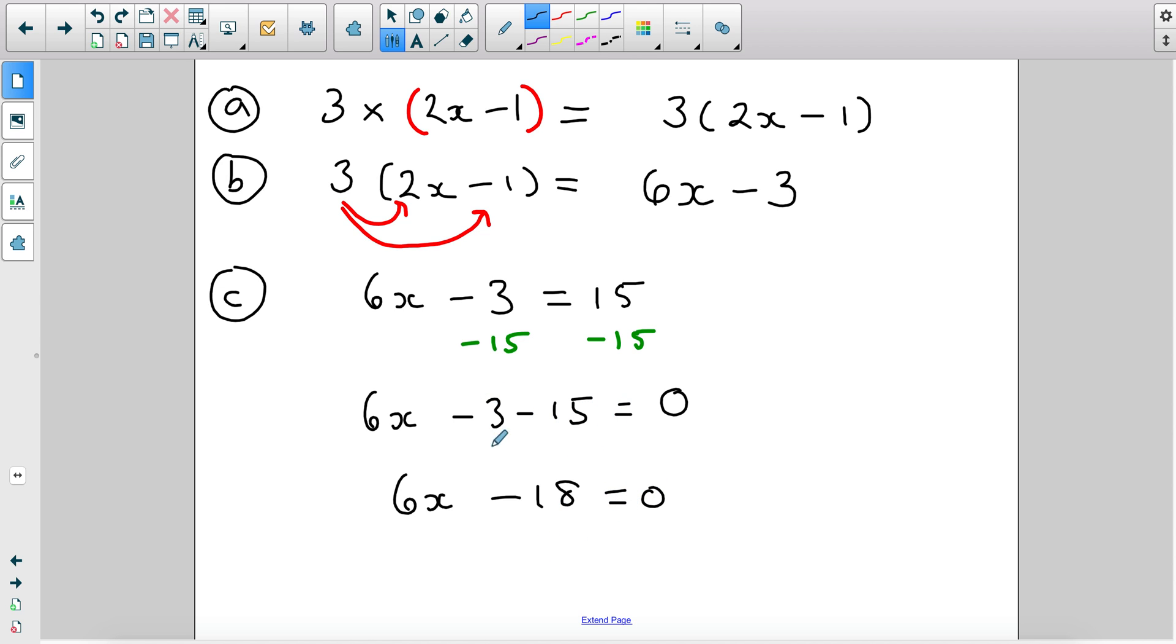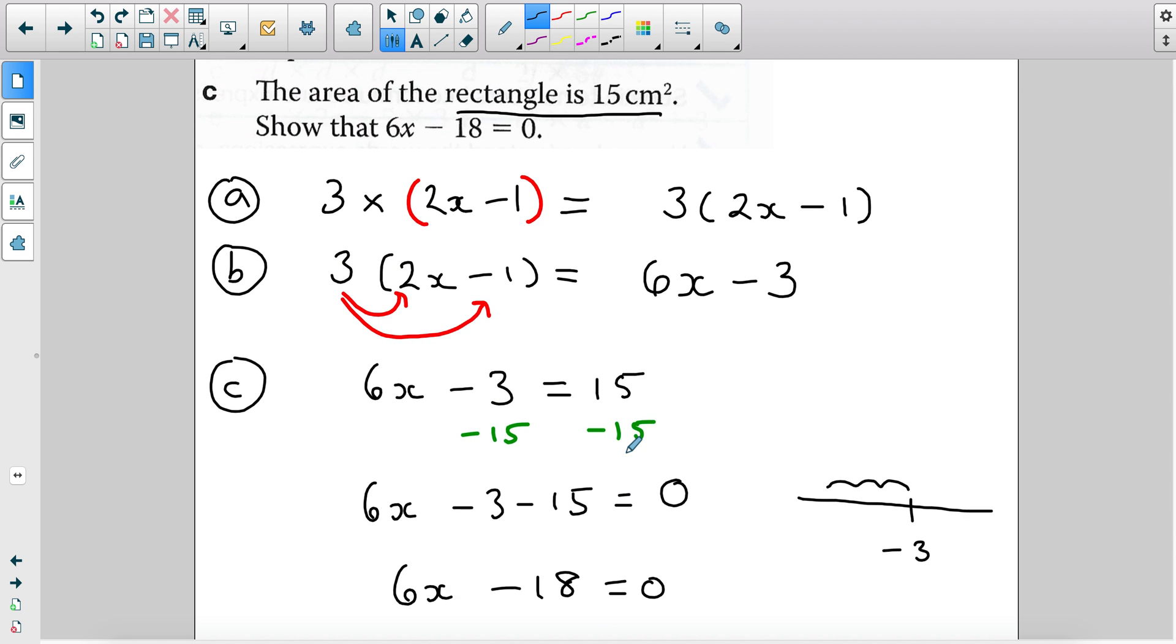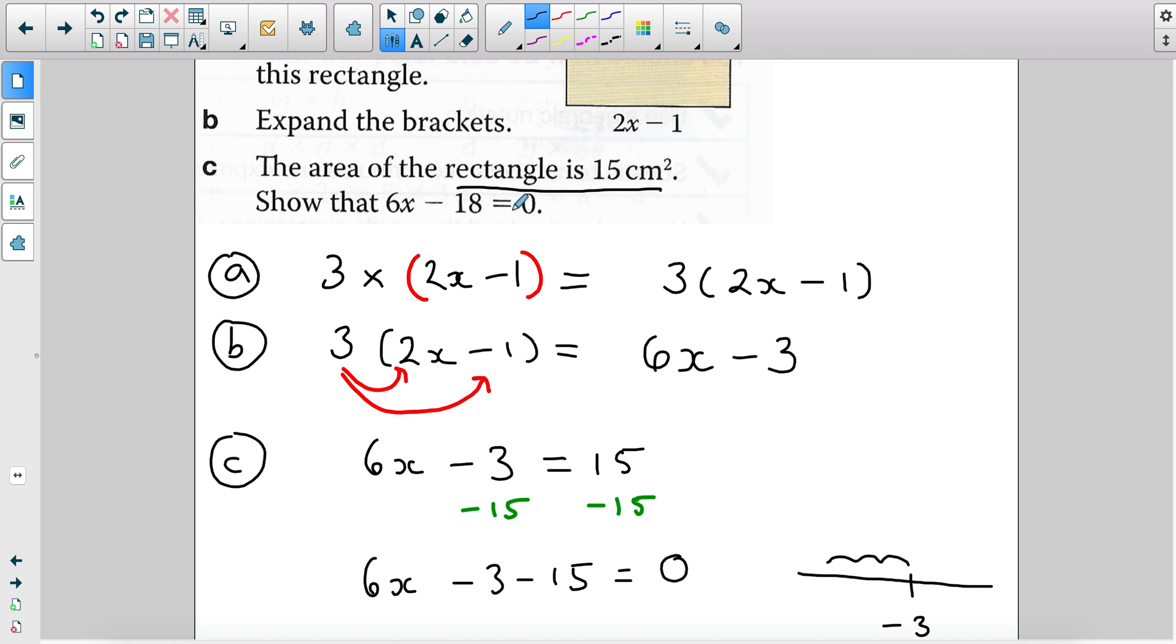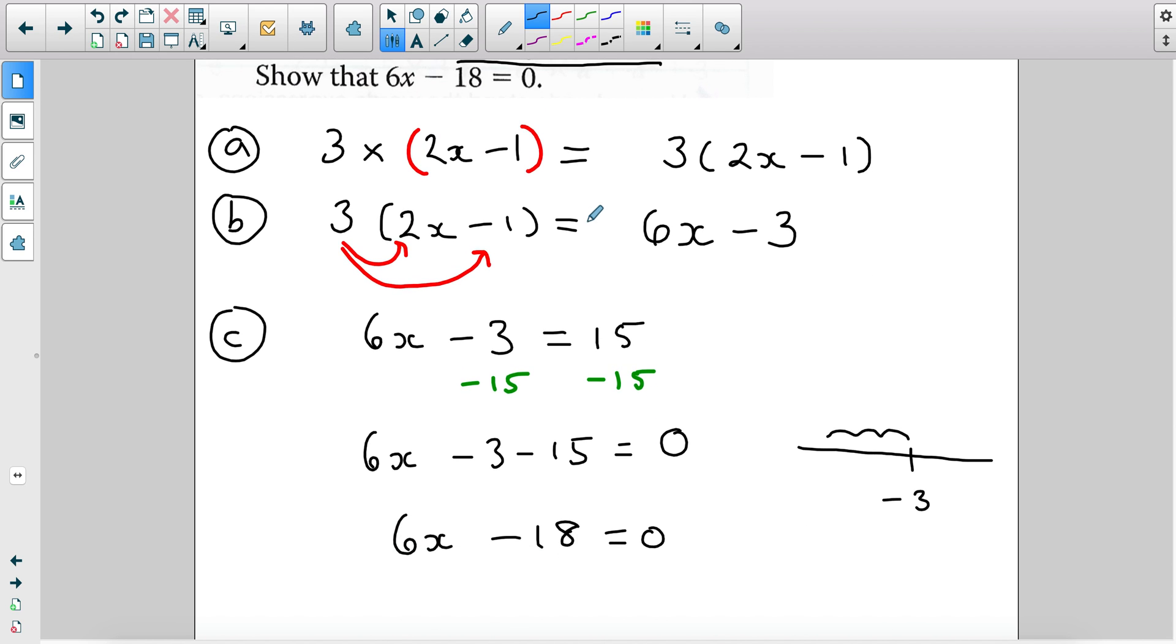If you're still confused about subtracting negatives, I always recommend using a number line. So if you're at negative 3 and you're taking away 15, you're going to move down the number line. And if you can count along, you'll notice you'll get to negative 18. And this gets us to the final step. Again, with questions that involve show that, you need to show all your steps. So you need to have this expression first, that you understand that the area is equal to 15, and you need to show the process you went through to get to 18.